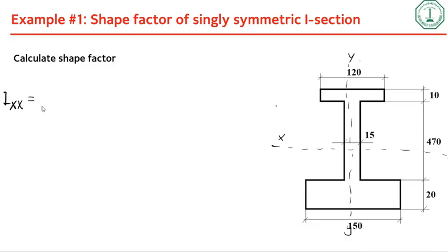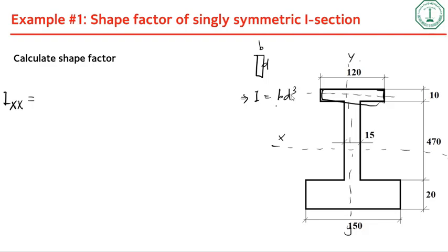For each rectangular sub-area with dimensions b and d, the local moment of inertia is bd-cubed divided by 12. To that we add Ah-squared to transfer the moment of inertia to the global centroidal axis.